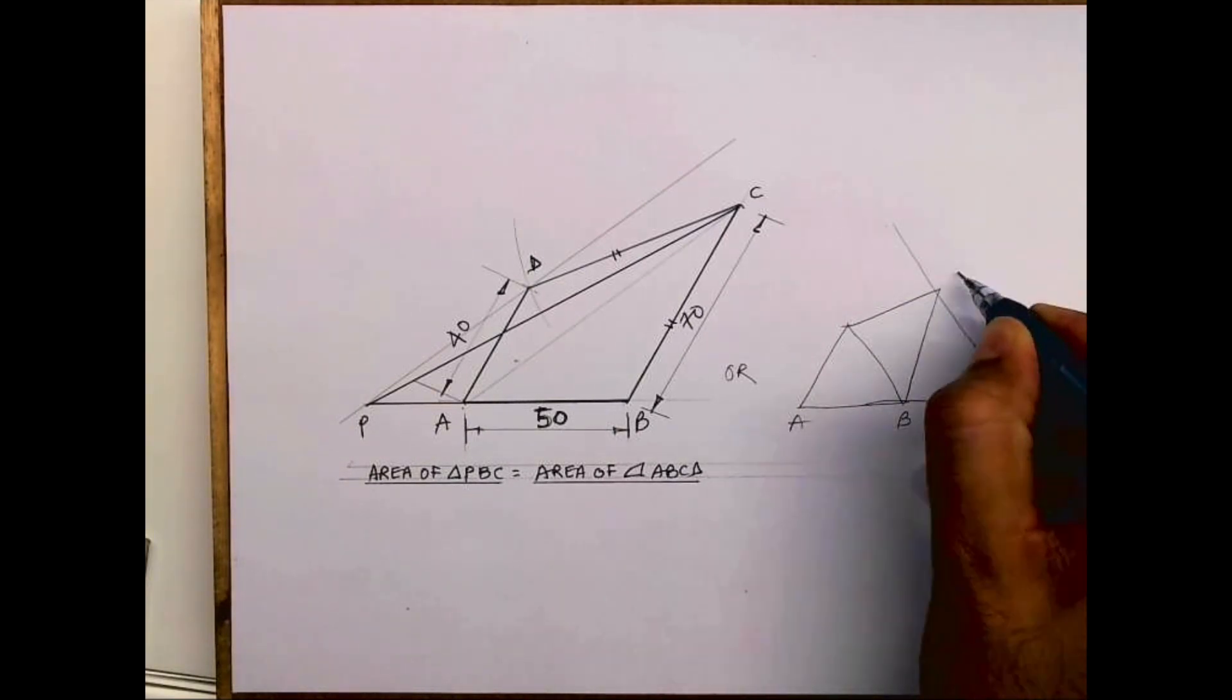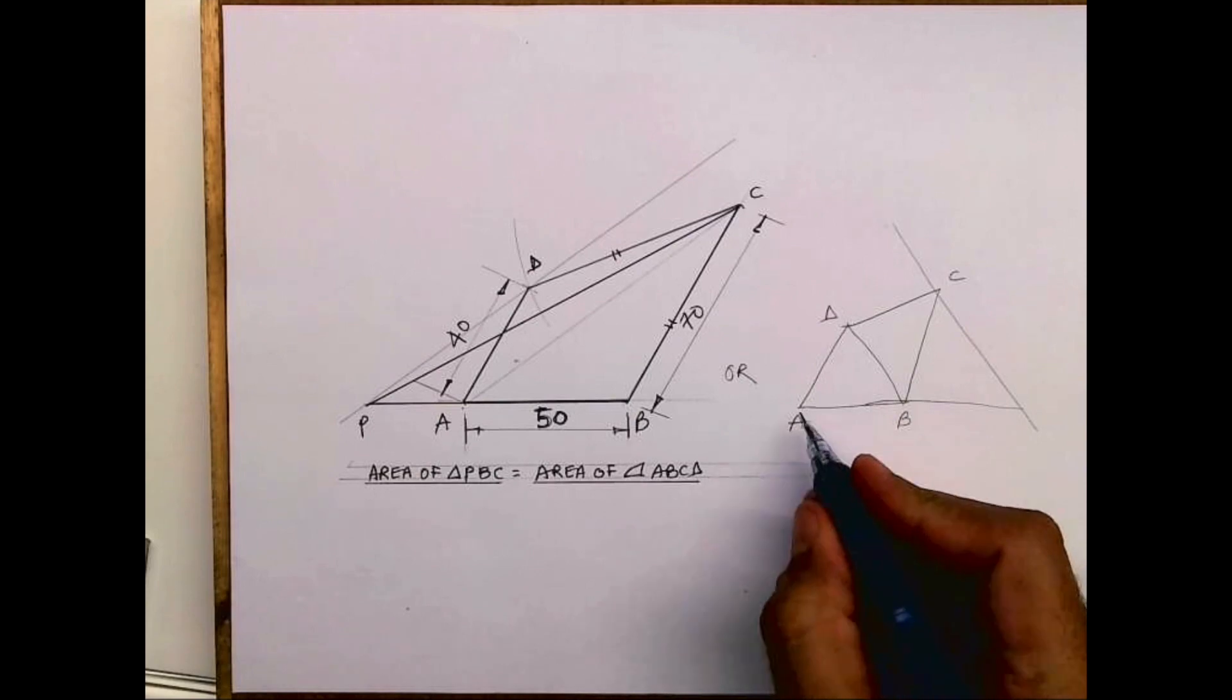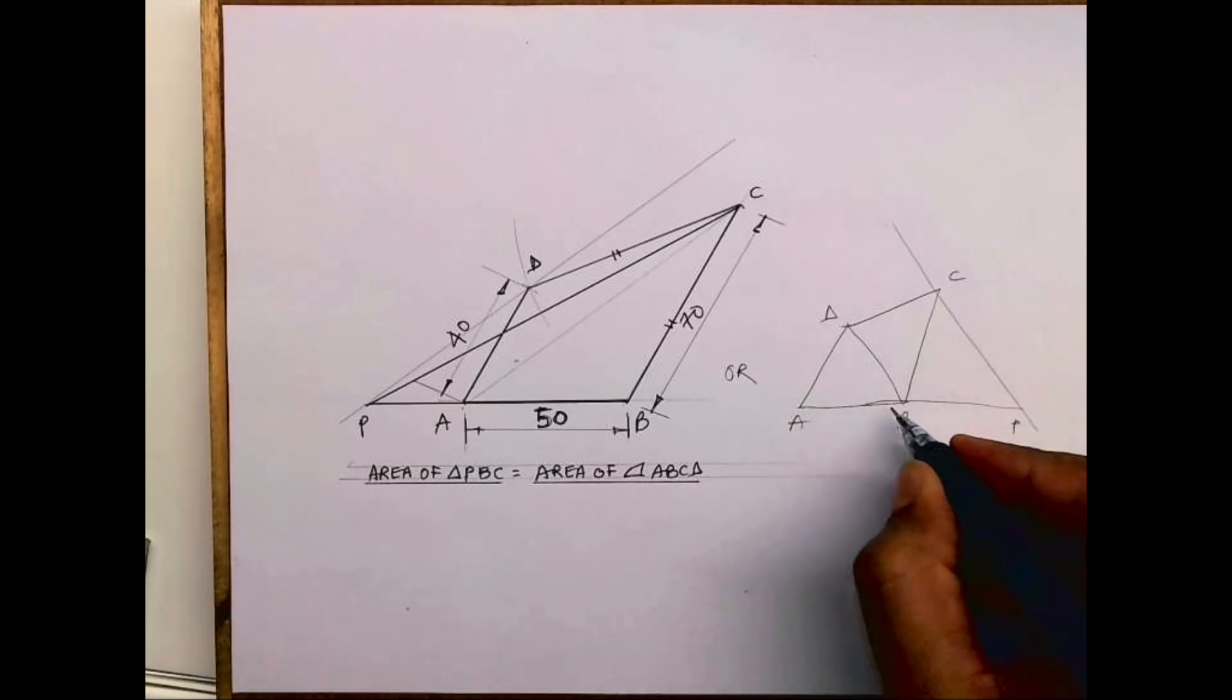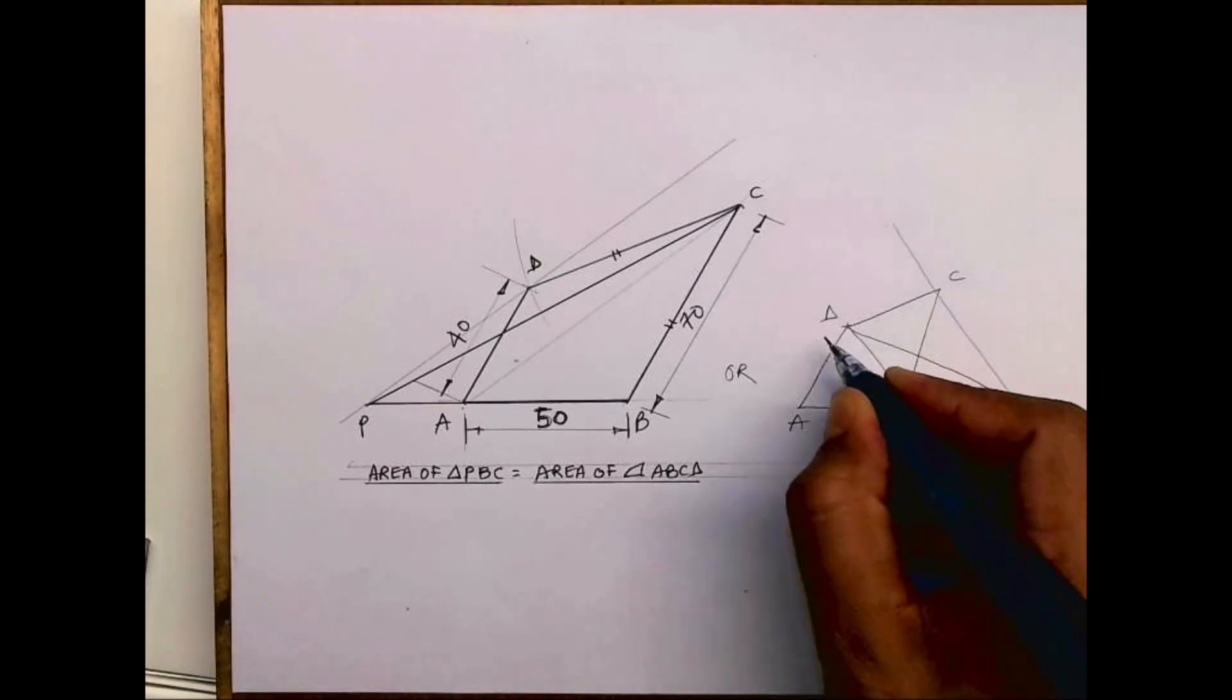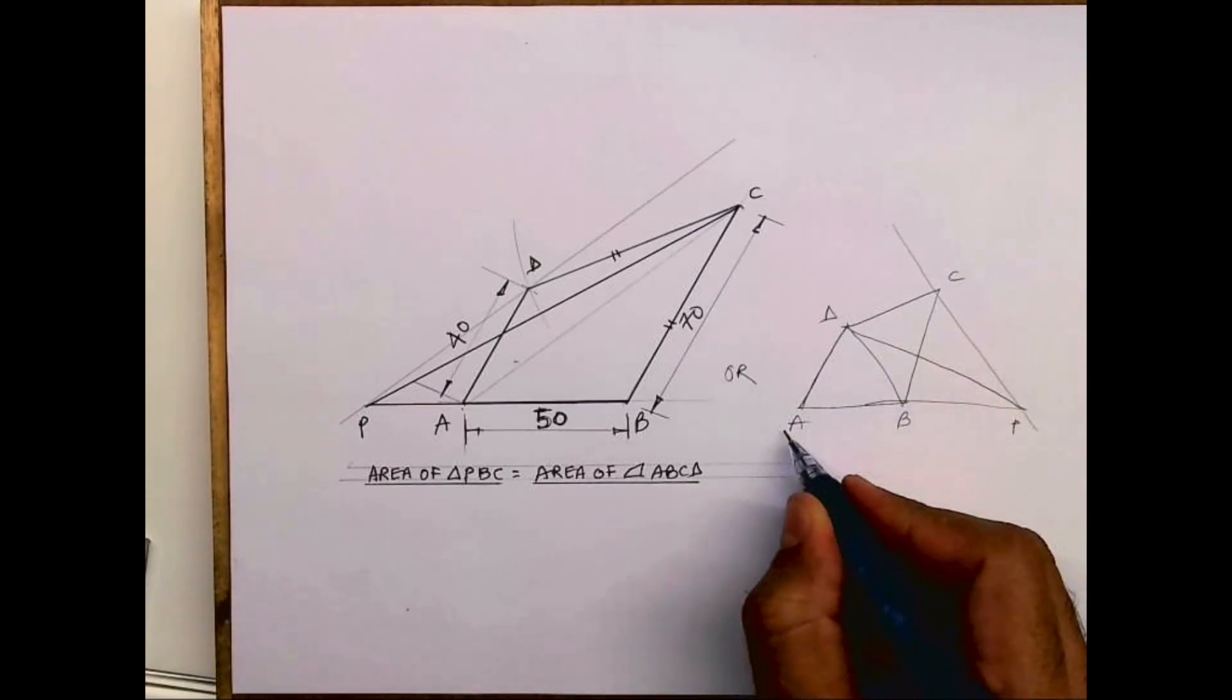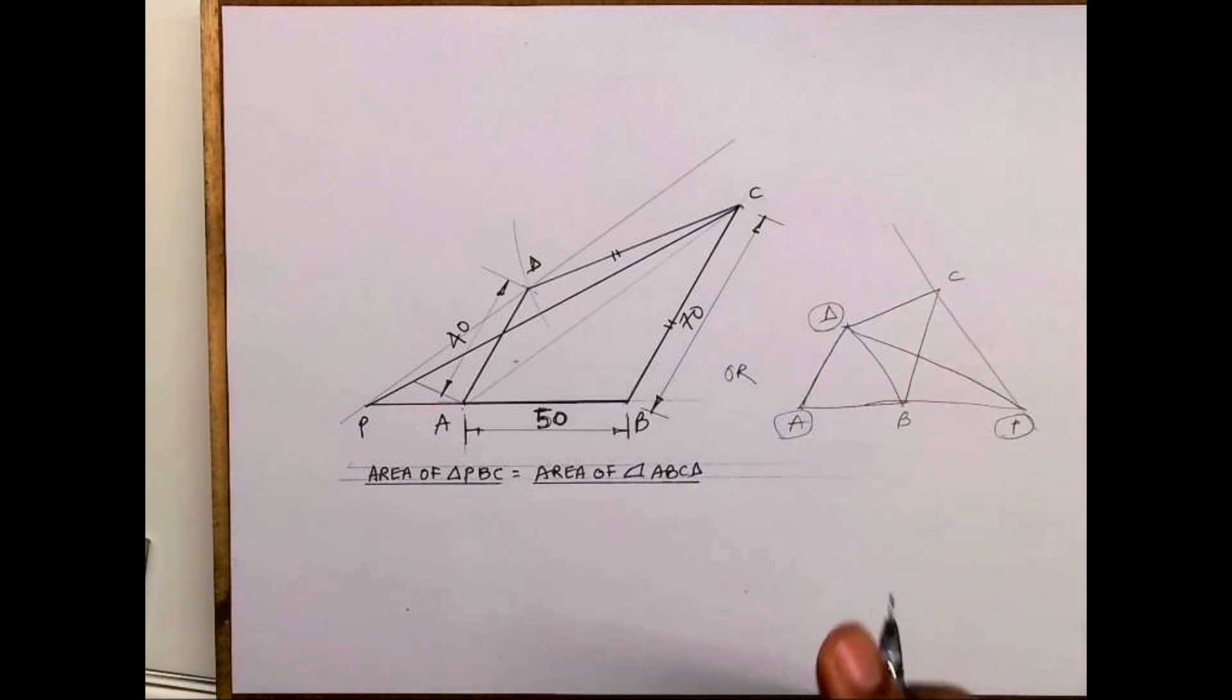We have quadrilateral ABCD. We want to convert this quadrilateral into a triangle, so I will take this triangle. I'll have triangle APD as my final answer, so I can do it like this.